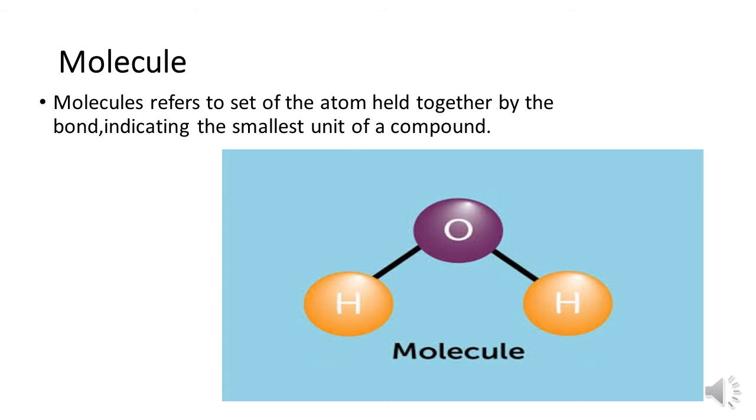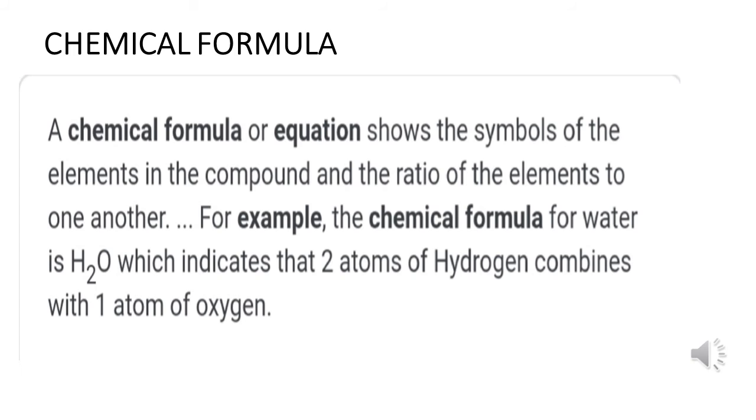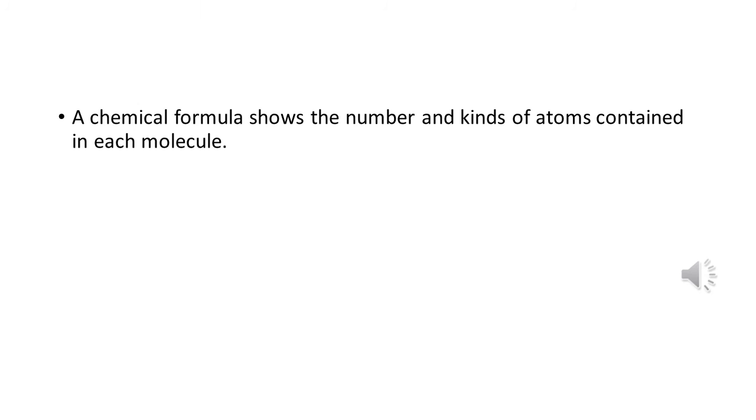Chemical formula: A chemical formula or equation shows the symbols of the elements in the compound and the ratio of the elements to one another. For example, the chemical formula for water is H2O, which indicates that two atoms of hydrogen combine with one atom of oxygen. In short, the chemical formula shows the number and kinds of atoms contained in each molecule.